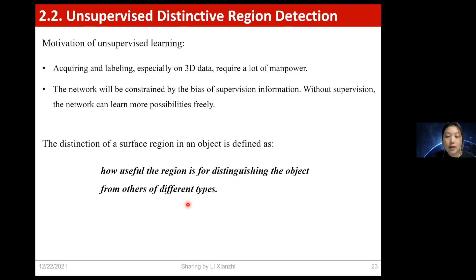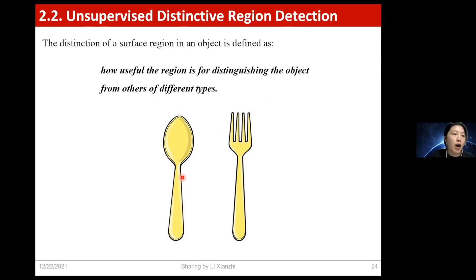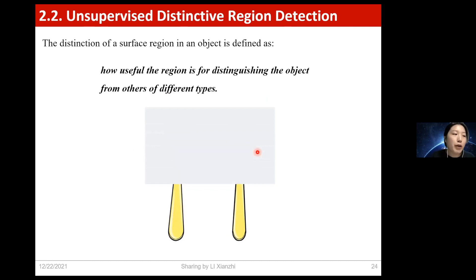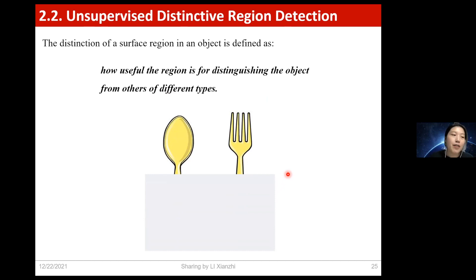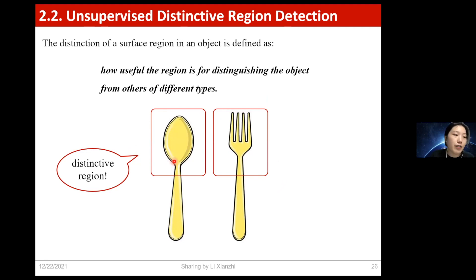Here is an example to better understand this definition. There is a spoon and a fork. If I hide the top region and only show you the bottom region, can you still tell which is the spoon and which is the fork? Obviously, the answer is no. But if I hide the bottom region and only show you the top region, all of you can easily distinguish the spoon from the fork. So the top region is distinctive because it helps us distinguish between the two different objects.